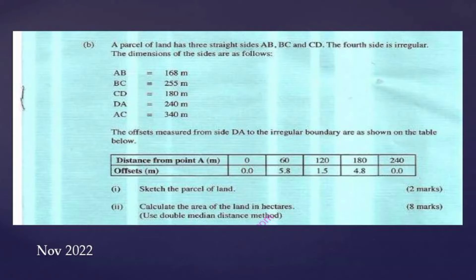AB will be 168 meters, BC will be 255 meters, CD will be 180 meters, DA will be 240 meters, AC will be 340 meters.